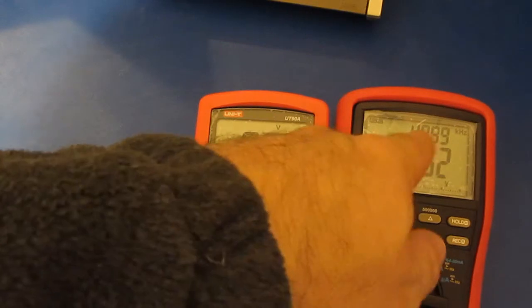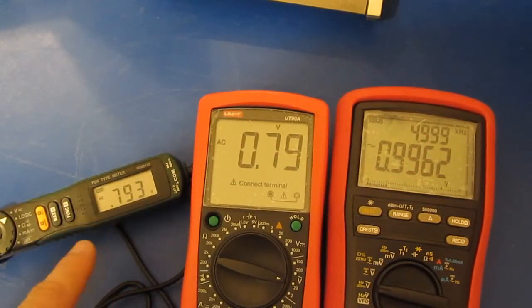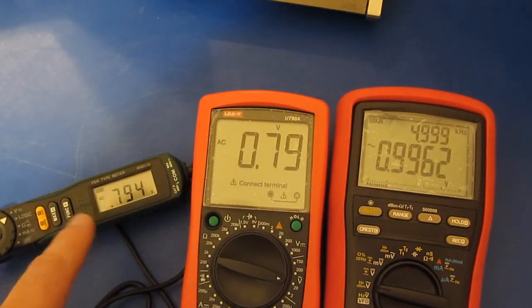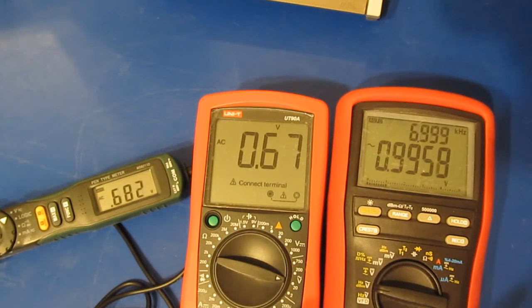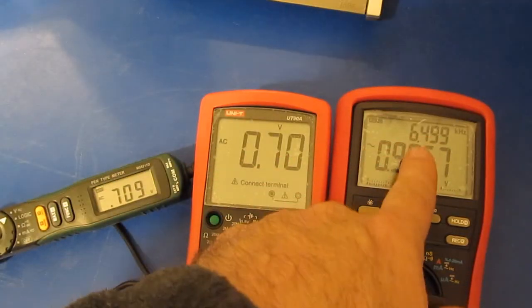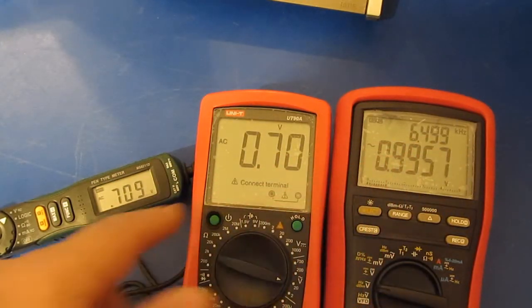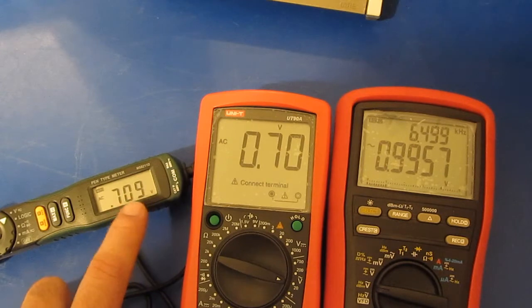You can see we're roughly at 5 kHz right now. And the UT90A and the Maztec are very similar.